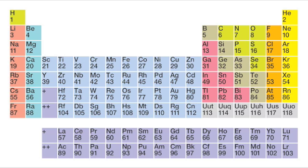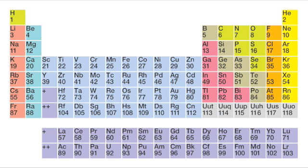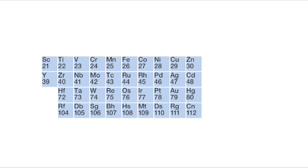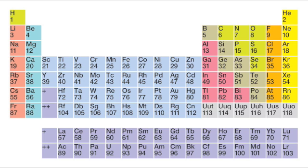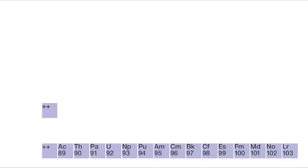Next up, it's the alkaline earth metals, including at 12 that bright light, magnesium. Transition elements, make yourselves known — we got some beautiful metals here: titanium, copper, platinum, and mercury. Up next, the lanthanides and actinides. The actinides include — no, not 'my anium' — it's uranium.